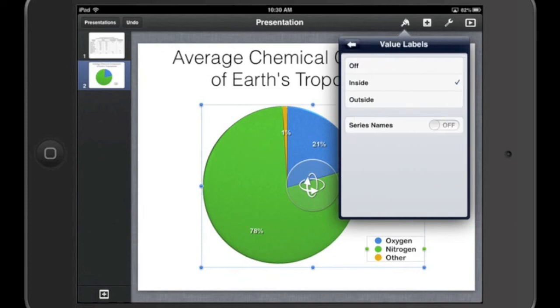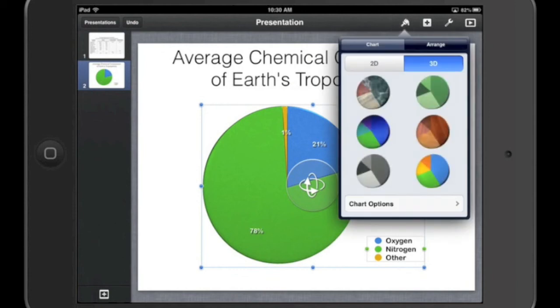You have the Value Labels. Those are the percentages. I can put them inside the chart as they are now. I could move them outside the chart like this, but I don't think that looks as good, so I'm going to leave them inside. Or you can turn them off altogether. And you can include the names as well, which is nice, but we already have a legend, so it's not really necessary to do both. So I'm going to leave those turned off. Okay, again into the Chart Options.